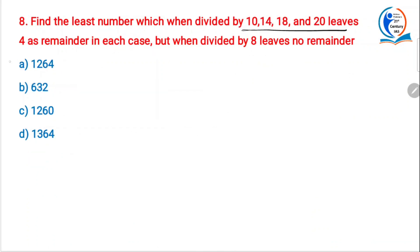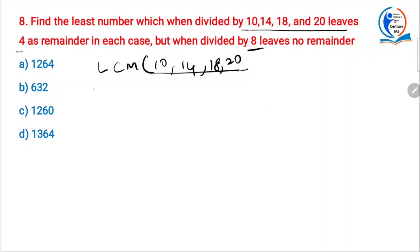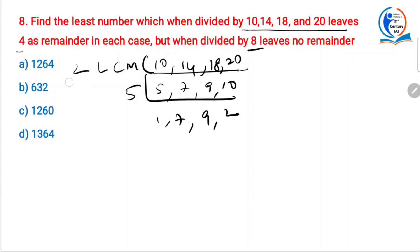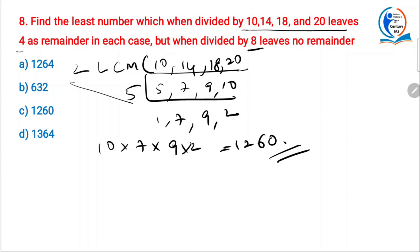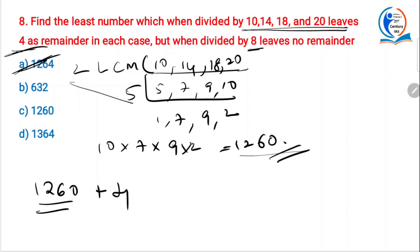Next: find the least number which when divided by 10, 14, 18 and 20 leaves 4 as remainder in each case, but when divided by 8 leaves no remainder. LCM of 10, 14, 18 and 20: working through — 2×5=10, 7×9=63, 10×2=20, 10×7×9×2 = 1260. LCM is 1260. To leave remainder 4, add 4: so 1260 + 4 = 1264. That is the answer.